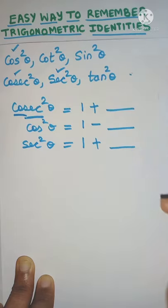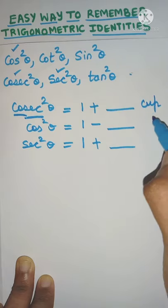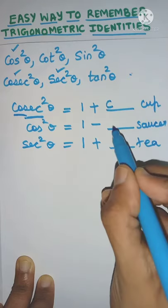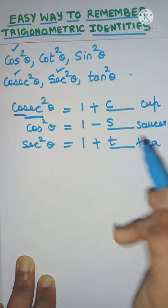Now for these trigonometric ratios simply remember this phrase friends: cup and saucer for t. Now note down the first letters. So you'll have c, s and t.